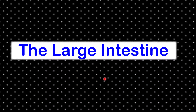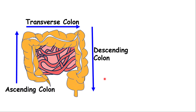Now, the large intestine is the last part of the digestive tract or alimentary canal. The large intestine is also called the colon, and it attaches to the small intestine. Food will enter from this section and go up — the ascending colon — then go horizontally, which is called the transverse colon, and then food will go down, which is called the descending colon.